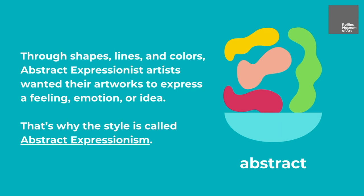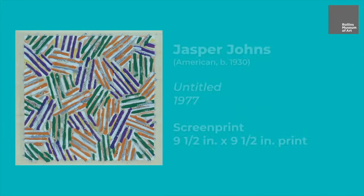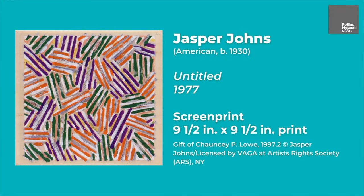Through different shapes, lines, and colors, abstract expressionist artists wanted their artworks to express a feeling, emotion, or idea. This untitled screen print from 1977 is part of a series of paintings and prints Johns created from the 1970s to the 1980s. All of the artworks in this series were focused on cross-hatching techniques and repetition.